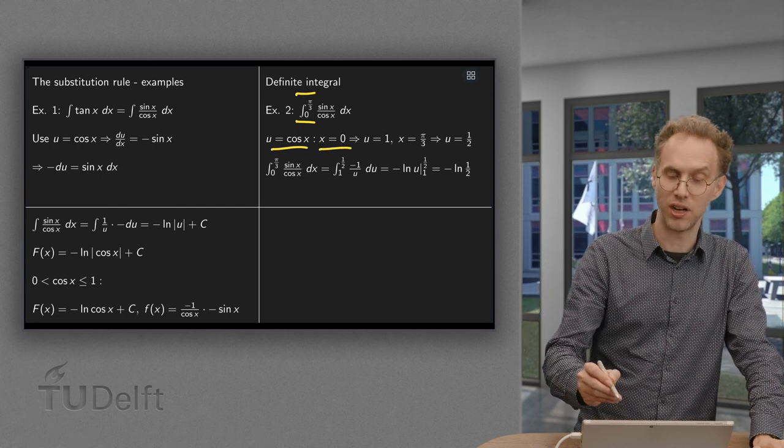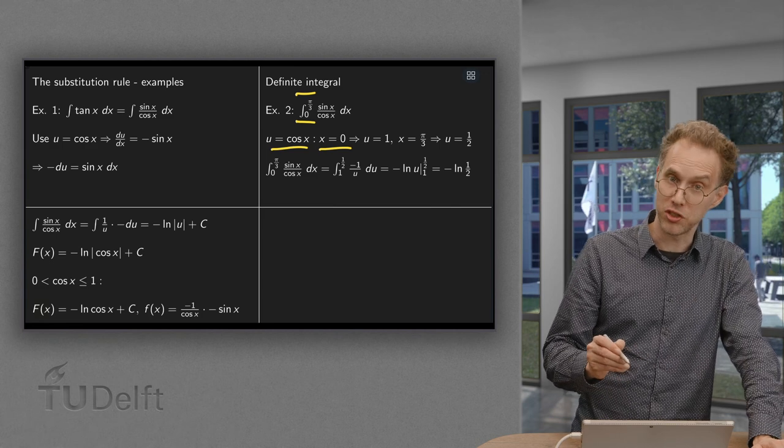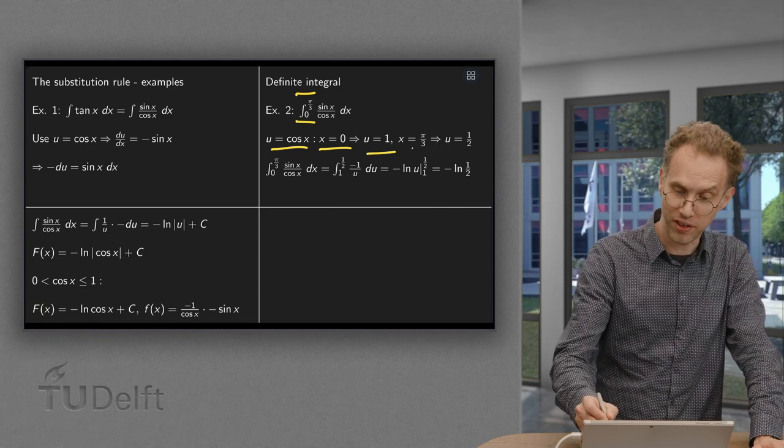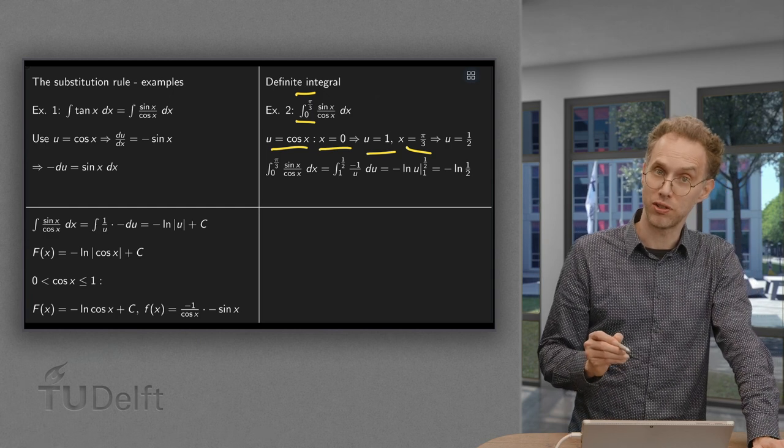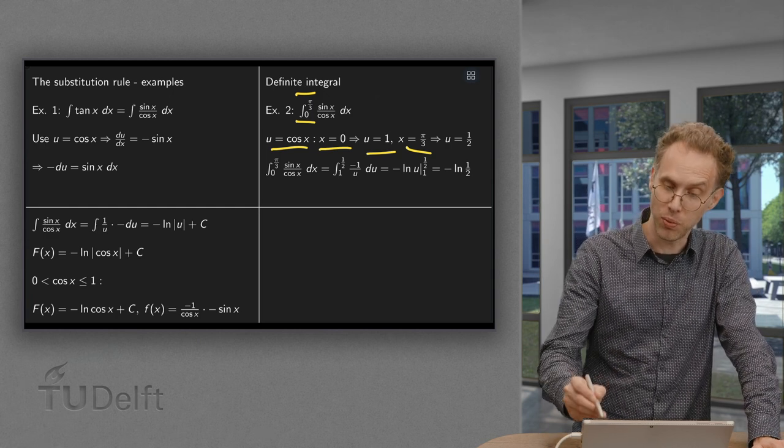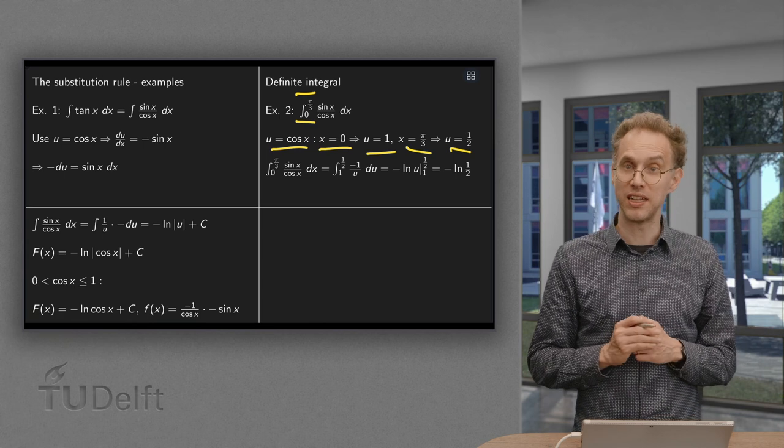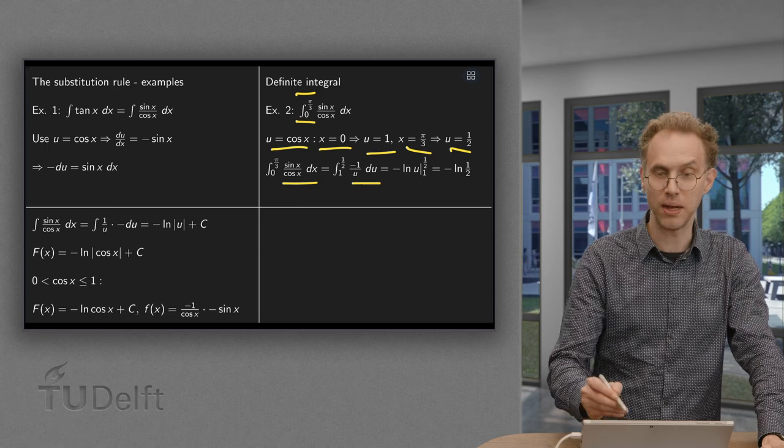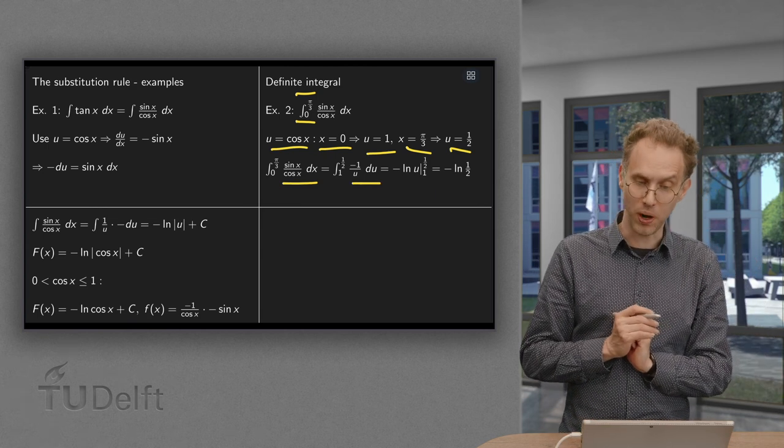Because if x equals 0, u equals the cosine of 0 equals 1. And if x equals π/3, then u equals the cosine of π/3 equals 1/2. So then the integration boundaries become from 1 to 1/2, and the other part is the same as in the previous example.